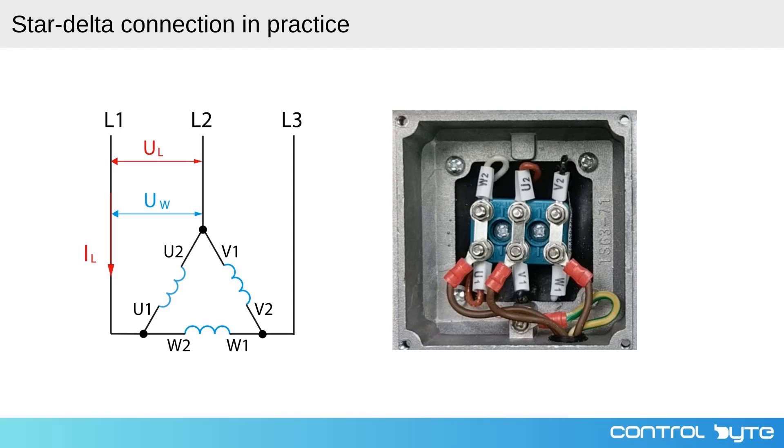The image on the right shows the actual motor terminal box where the windings are connected in a delta configuration. The connections in the terminal box correspond to the delta connection shown in the schematic. You can see that U1 is connected to W2, V1 is connected to U2, and W1 is connected to V2. These connections ensure that each motor winding is exposed to the full line voltage, allowing the motor to operate at its full power capacity.